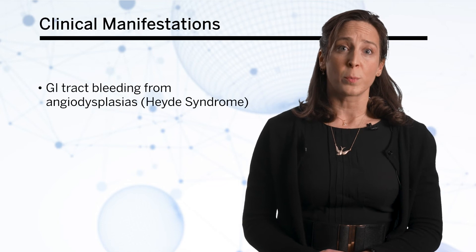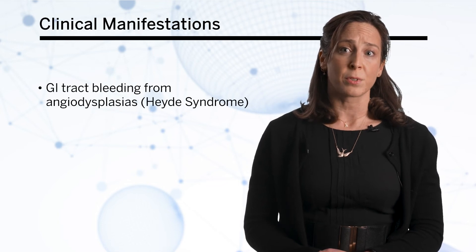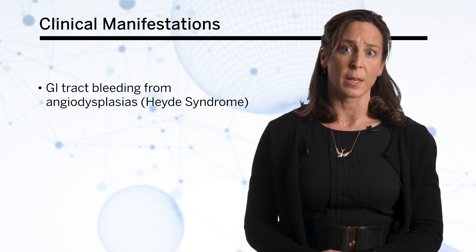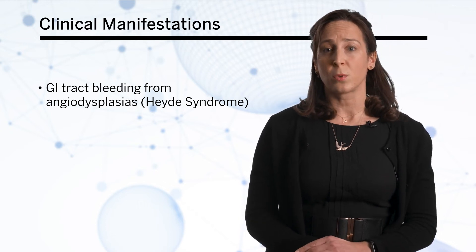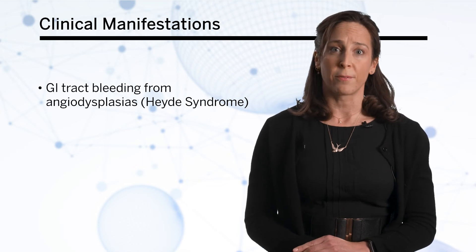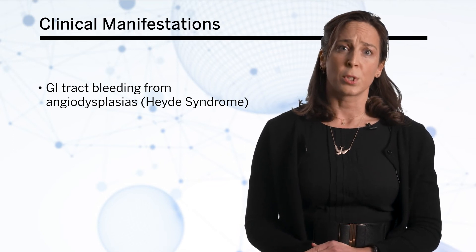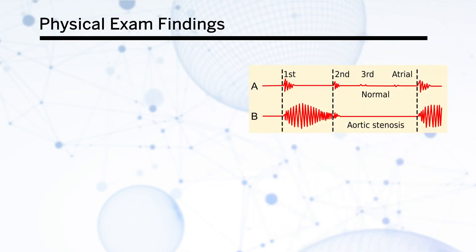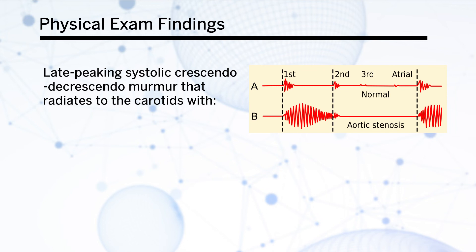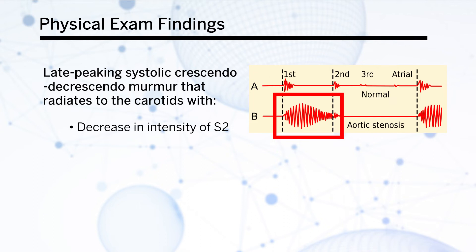Aortic stenosis can also be complicated by an increased risk of bleeding from the gastrointestinal tract due to Heyde syndrome. This syndrome is thought to be due to an acquired type 2A von Willebrand deficiency, which leads to angiodysplasias in the GI tract. The hallmark physical exam finding in aortic stenosis is the late-peaking systolic crescendo-decrescendo murmur that radiates to the carotids with a decrease in intensity of S2.